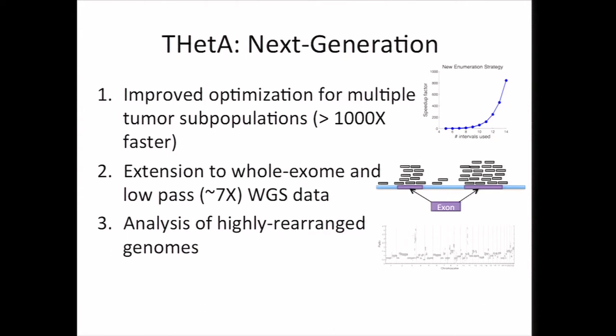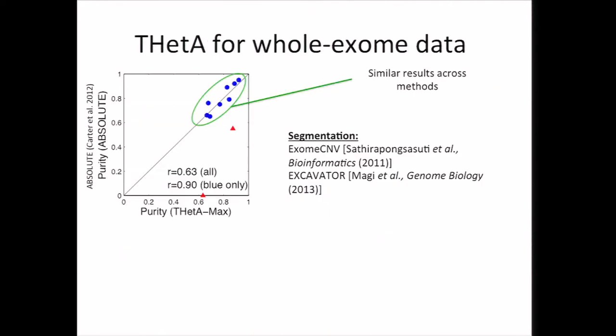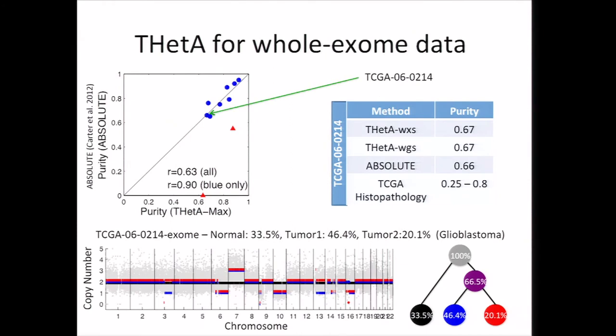First, we applied THetA to a number of whole exome samples, comparing purity values inferred by THetA to purity values reported by the original ABSOLUTE paper using SNP array data. For most of these, we find our estimates of purity are quite similar. If we look at one sample where both algorithms return similar purity, we find they both have similar purity. If we apply THetA to whole genome data, we again get a similar purity value. However, in contrast to ABSOLUTE, THetA was actually able to infer several subclonal aberrations — deletions on chromosomes 3 and 13.